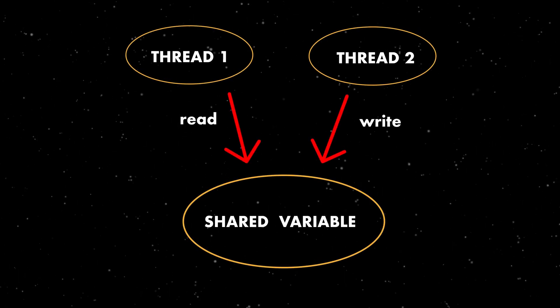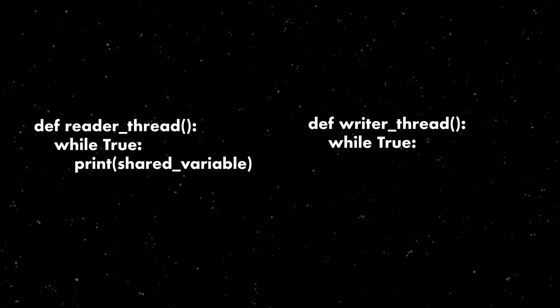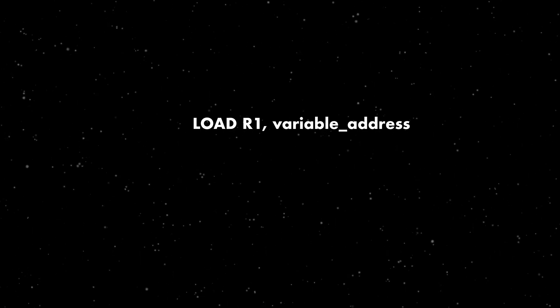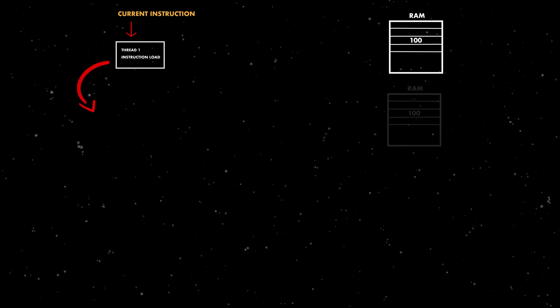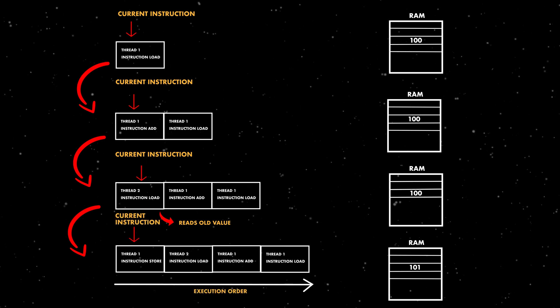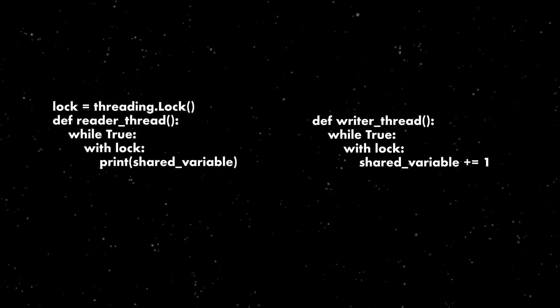Threads that execute concurrently, whether in parallel or not, can have race conditions. When two or more threads share a resource like a variable, if one of them writes to that variable the behavior can be unpredictable. Even with a single line of code per thread, we still have a race condition because writing is not an atomic instruction. Once compiled, it's actually three instructions: read the value from memory, update it, and store it back. If there's a context switch before the last instruction, the read will still get the old value. For that, we use mutexes that lock a shared resource so that only one thread can access it at a time.